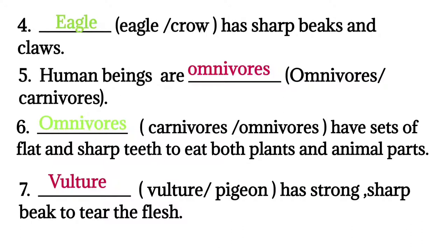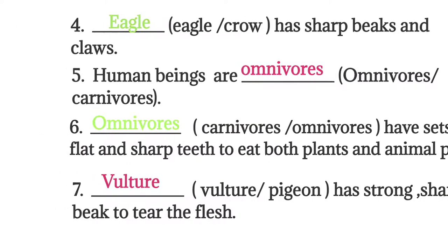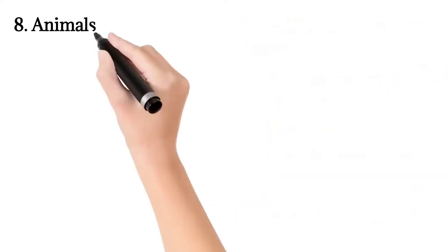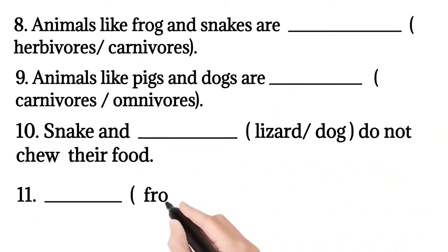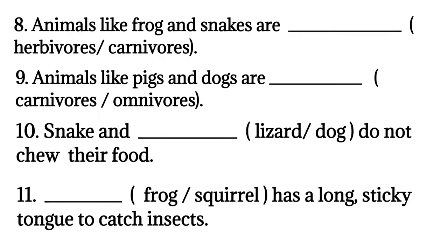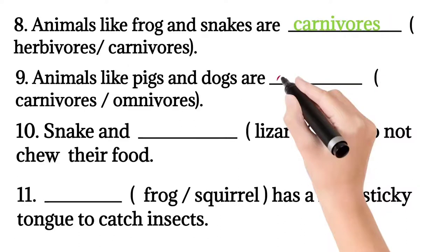Question seven: vulture or pigeon has a strong sharp beak to tear the flesh? Correct answer: vulture. Question eight: animals like frog and snakes are herbivorous or carnivorous? Correct answer: carnivorous. They eat the flesh of other animals.